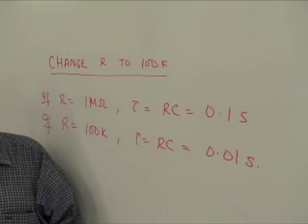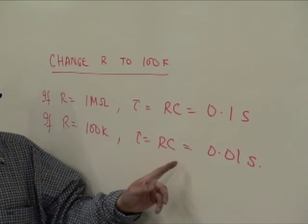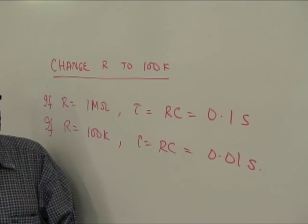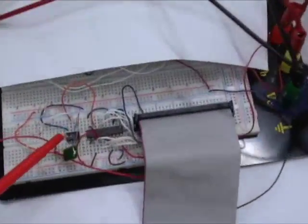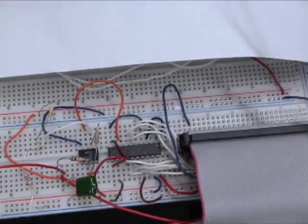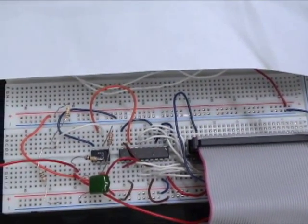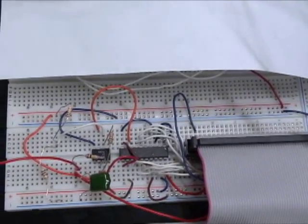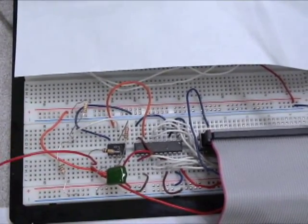Now we'll see the demonstration of the change in R value on the oscilloscope. Okay, we're going to change here—the resistor value has been changed to 100K, that's the resistor there. We have to load the program, so we have loaded the program into the computer.